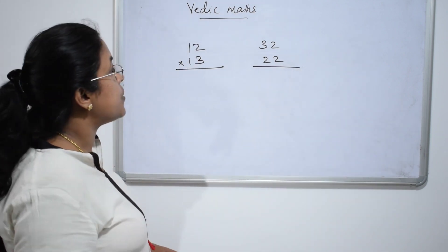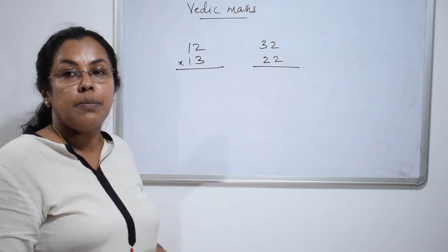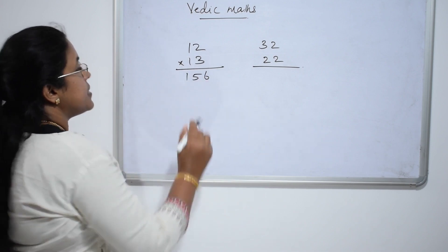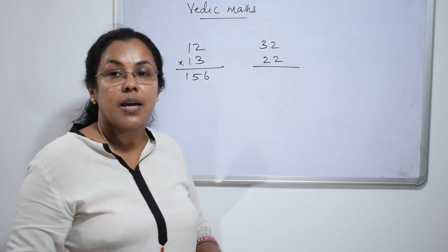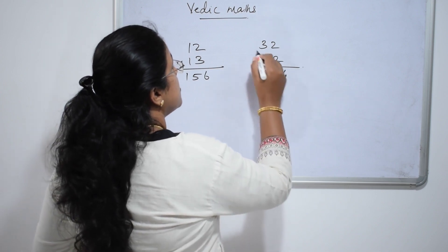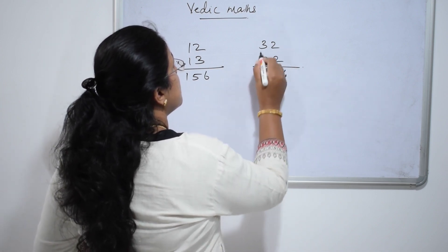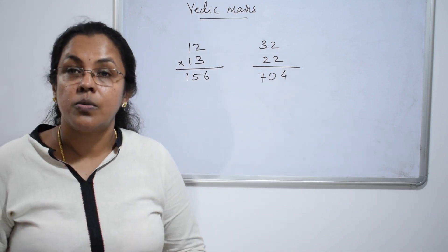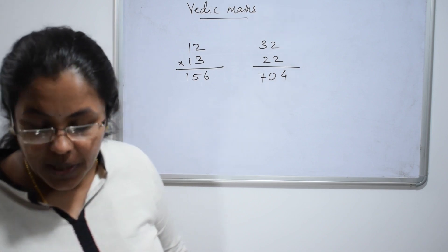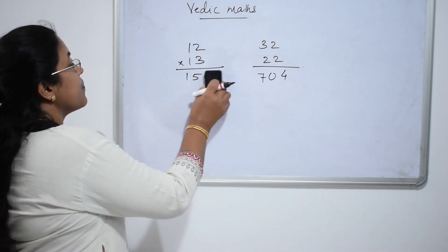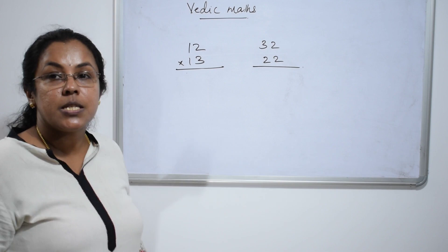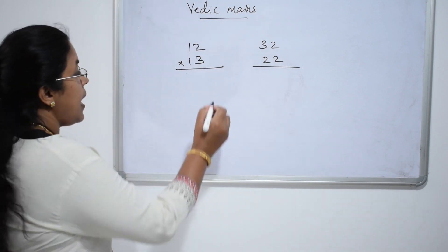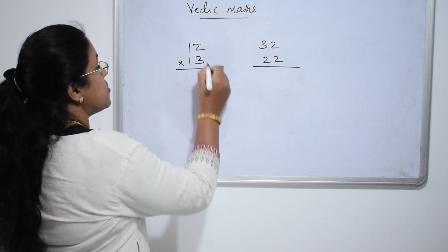How to multiply these two numbers using this method? In this method, first multiply the two digits in the unit place and write it here. For 12 × 13: 3 twos are 6.